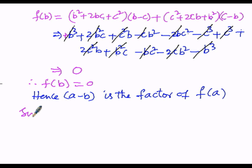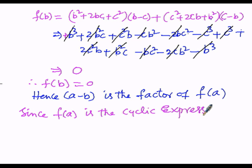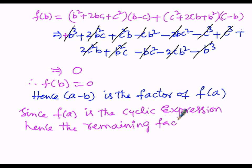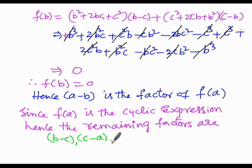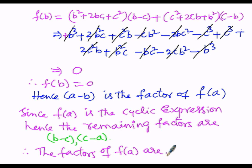Since f(a) is a cyclic expression, the remaining factors are determined by the cyclic structure. If (a - b) is the first factor, then the remaining factors are (b - c) and (c - a). Therefore, the factors of f(a) are (a - b), (b - c), and (c - a).